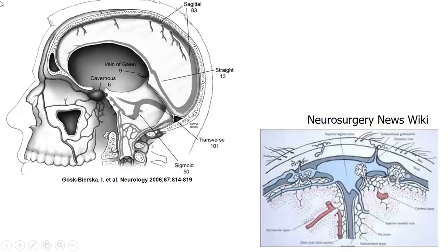The veins play a crucial role. We have the sagittal sinus, straight sinus, and transverse sinus, and arachnoid granulations protrude into these large veins — that's where CSF gets absorbed into the system, along with the lymphatics that run alongside the veins.